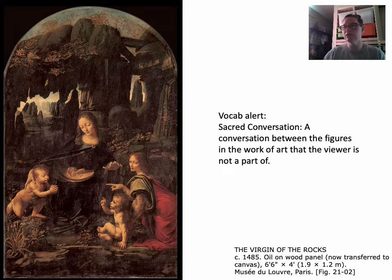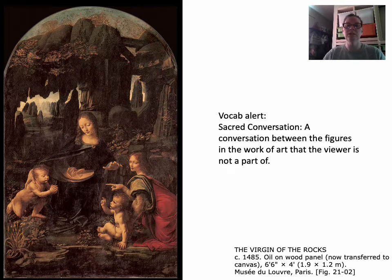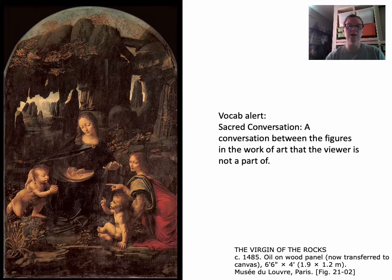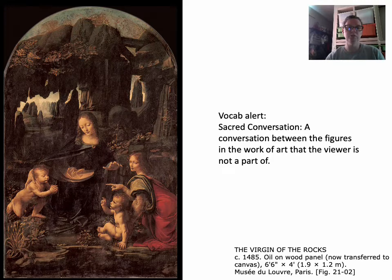The Virgin of the Rocks is a typical painting in the da Vinci style. It has an odd setting — the background isn't something you could walk outside your door and say 'that's exactly what Leonardo was painting.' The figures in the composition are having a sacred conversation, similar to what we looked at last lecture. The four figures point at each other, look at each other, they're communicating — and the viewer is not part of that scenario.